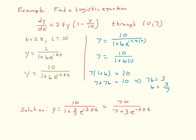Now we need to find b using the initial condition. Plugging t = 0 and y = 7: 7 = 10/(1 + b·e^(−2.8·0)). Since e^0 = 1, this gives 7 = 10/(1 + b). Multiplying both sides by (1 + b): 7 + 7b = 10, so 7b = 3, meaning b = 3/7. The solution is y equals 10 over (1 + (3/7)·e^(−2.8t)).